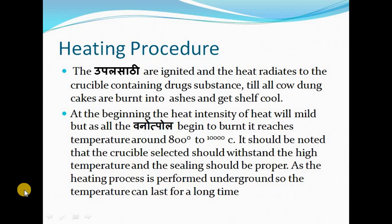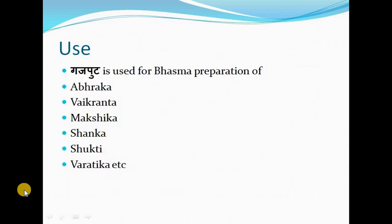Heating procedure for Gajaputa: the upala are ignited and the heat radiates to the crucible containing drug substances till all cow dung cakes are burnt into ashes and get self-cooled. At the beginning heat intensity is mild, but as the Vanyapala begin to burn it reaches a temperature of around 800 to 1000 degrees centigrade. It should be noted that the crucible should withstand the high temperature and sealing should be proper, as the heating process is performed underground so the temperature can last for a long time. Use of Gajaputa.